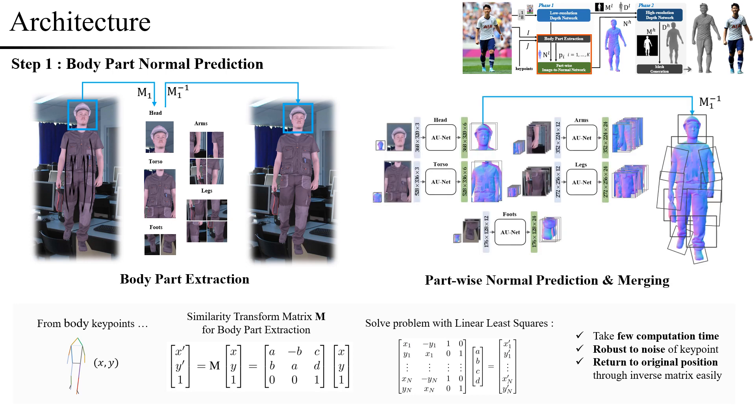Each of these extracted parts is divided and passed through a network that predicts the normal map of each part. Finally, these part-normal maps are merged to create a high-resolution normal.